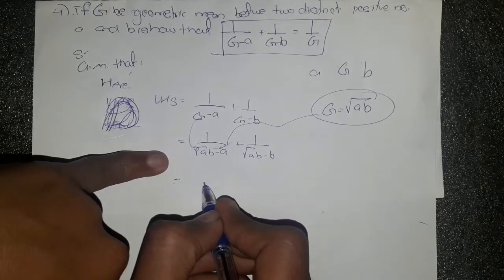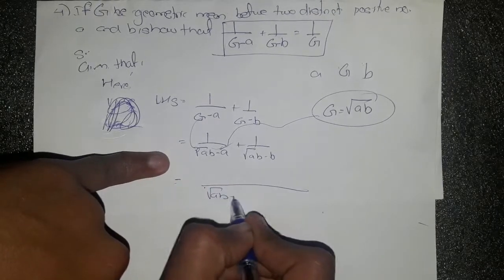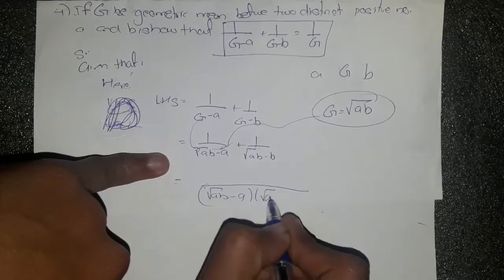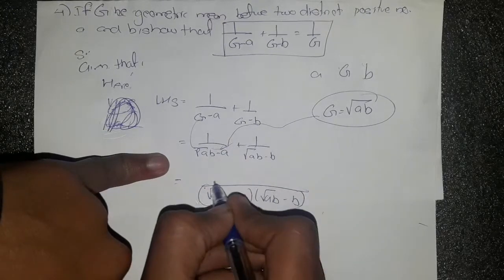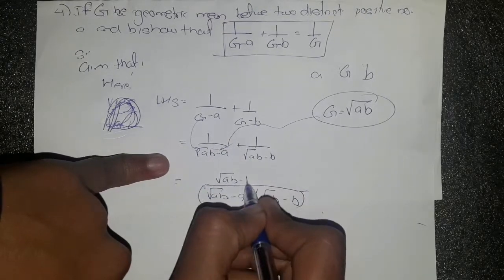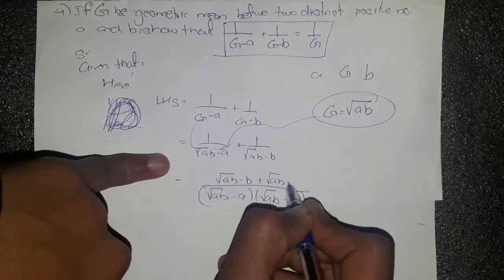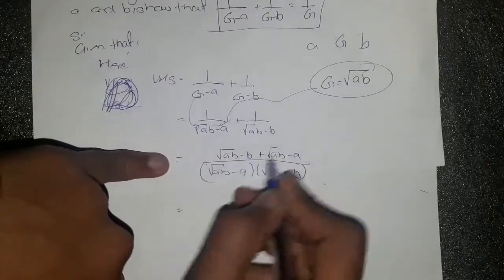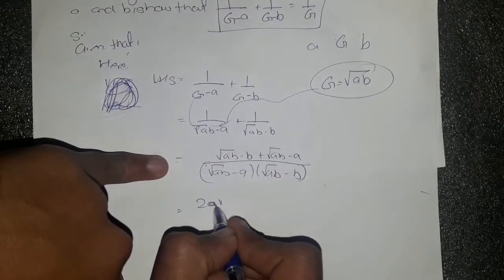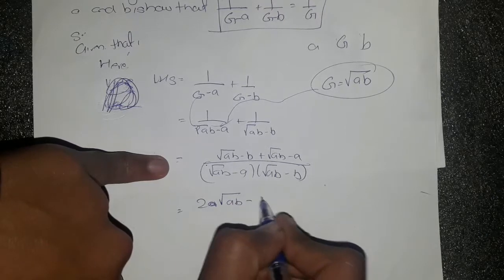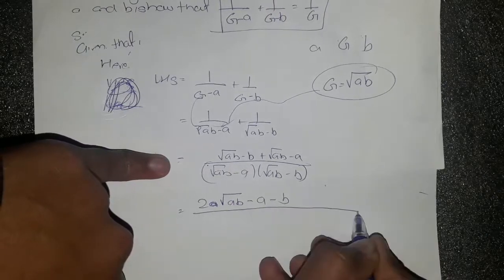We will take LCM. We can multiply here, so we get 2 root AB minus A minus B in the denominator.